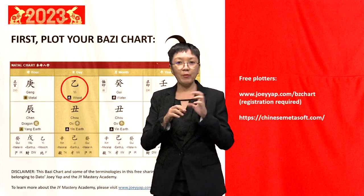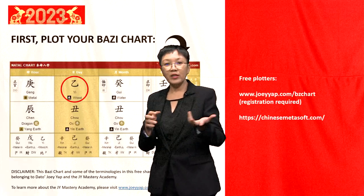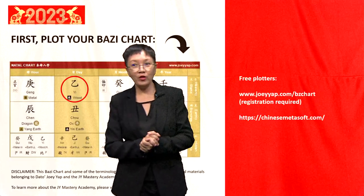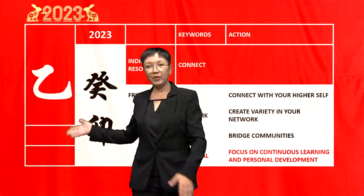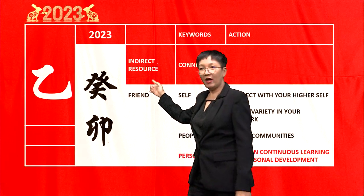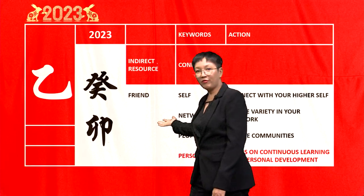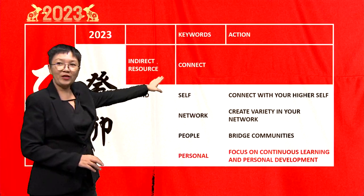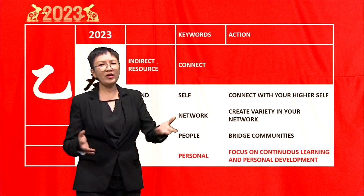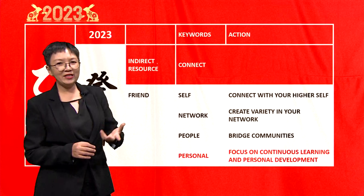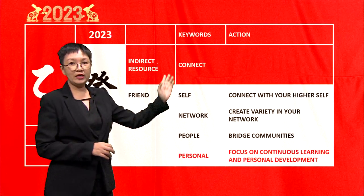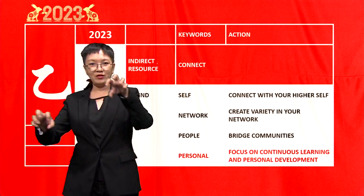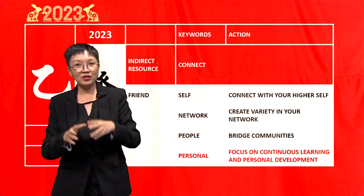Let's dig into the Yeet Wood. I'm going to share this as a series of keywords so that you can easily apply the concept to your goals. For the Yeet Wood Day Master, the Water Rabbit or Kui Mao presents as indirect resource producing or sitting on the friend star. We have more weightage to the one at the top — it's visible and therefore easily attainable. So the first keyword is: connect. The role of indirect resource is always to connect different bits of data together, hence we focus on this word 'connect.'